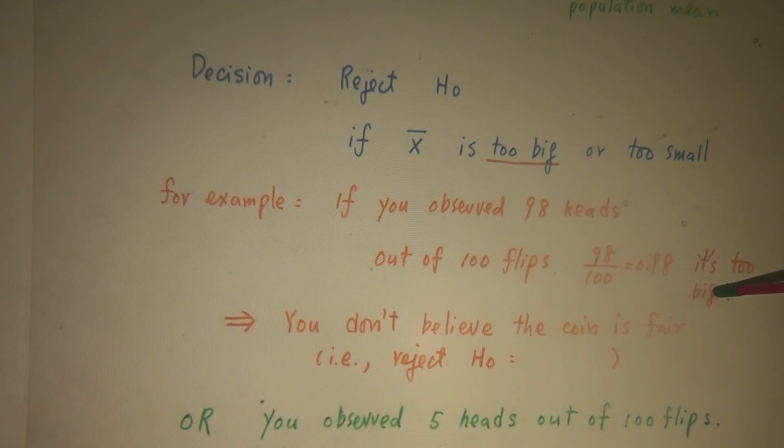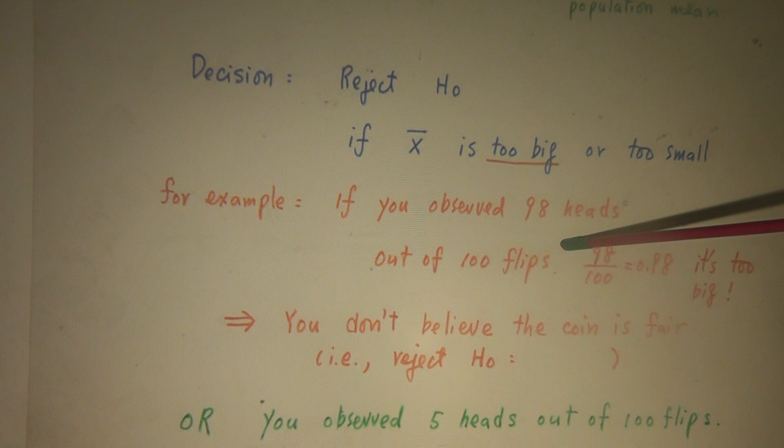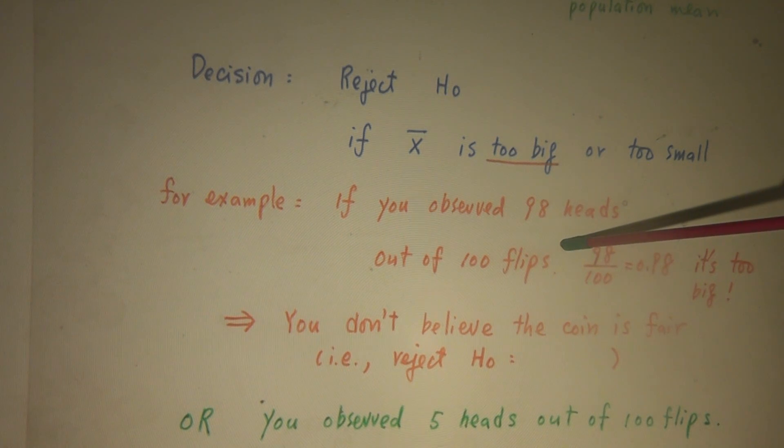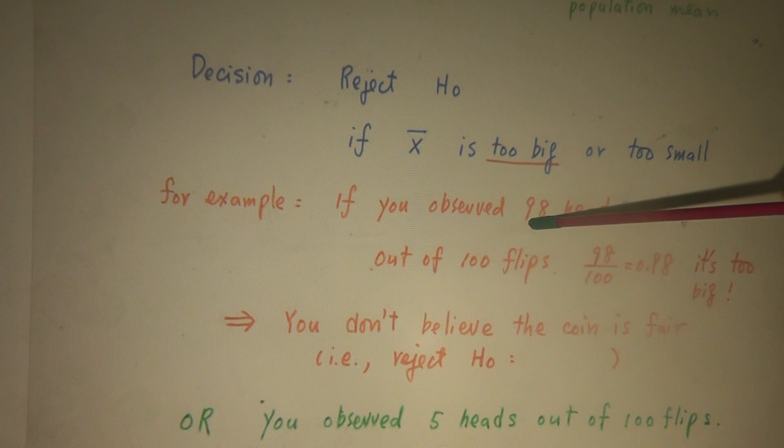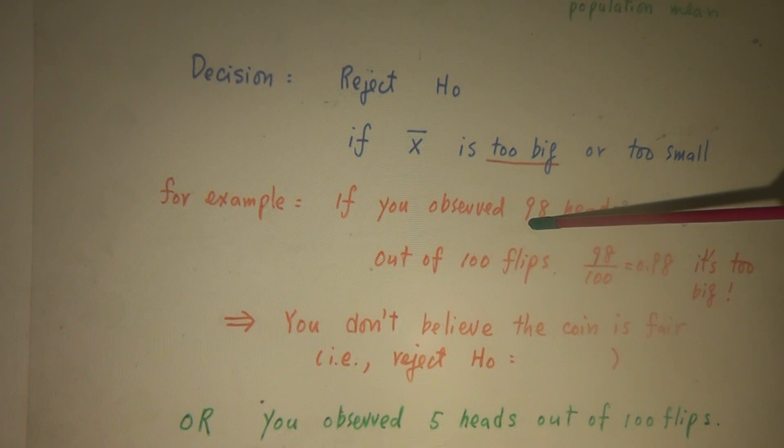If you tell me this is a fair coin and you make 100 flips and you see 98 heads, I am not going to believe this is a fair coin. Because if this is a fair coin, I expect to see the number of heads observed should be around 50. Now this is 98. It's too far away from what I expect, 50. So I don't believe the coin is a fair coin.